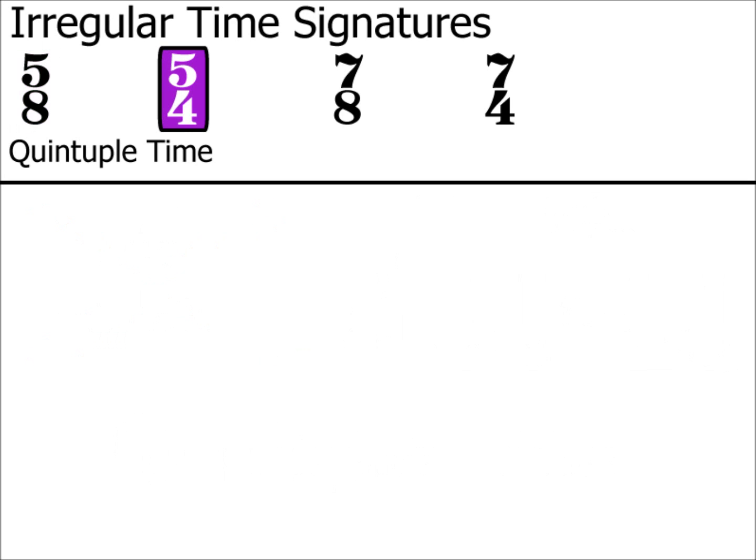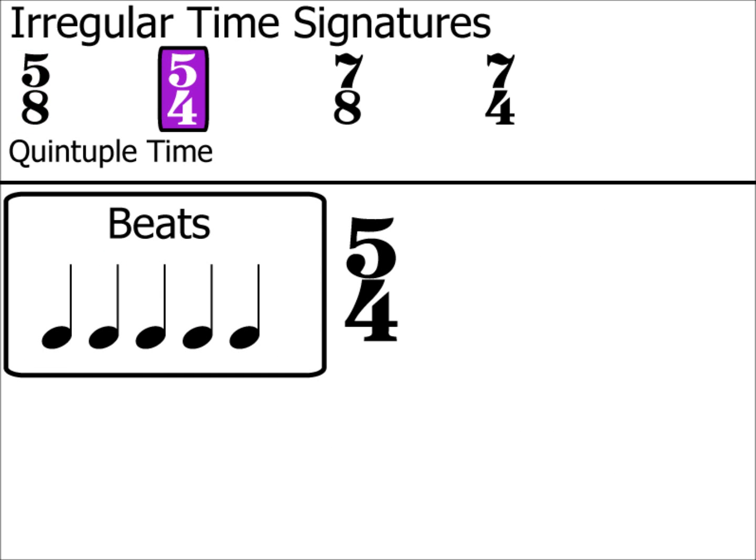Let's look at another quintuple time signature, 5/4, which has five crotchet beats per bar. I've always found 5/4 a strangely satisfying time signature. Two famous pieces that spring to mind which use it very effectively are Mars from the Planets by Holst, and the theme tune to the original series of Mission Impossible — not the film version with Tom Cruise, as that moves into 4/4 after about a minute. Do look them up on YouTube and listen and feel the unusual beat of five crotchets per bar.